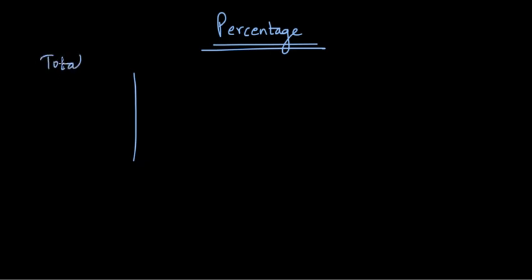On the left, we will write total and on the right, we'll just write parts. On the left hand side, wherever we have written total, below that just write hundred and on the right hand side, we won't write anything for now.